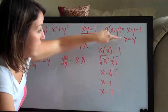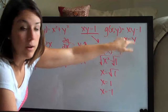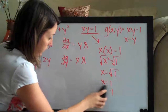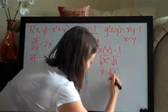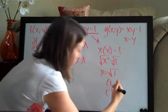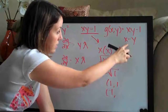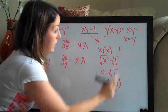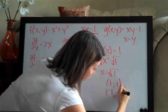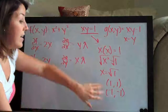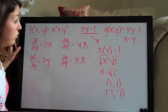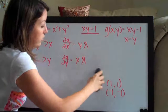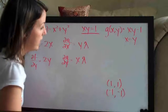If we plug 1 in for x, then y also equals 1. So if we plug in 1 for x, then y also has to equal 1. If we plug in negative 1 for x, y also has to equal negative 1. So its corresponding point is negative 1. Now we've found our two points that may be maxima or minima: (1, 1) and (−1, −1).